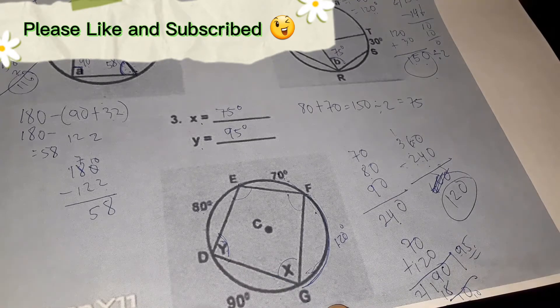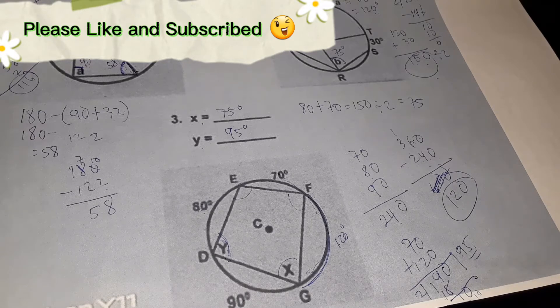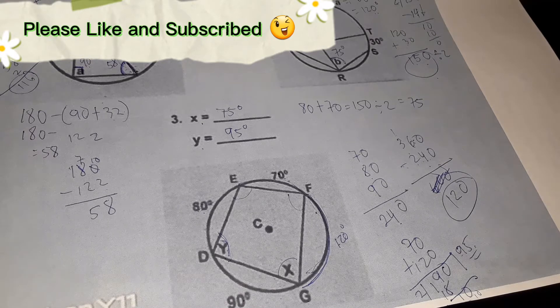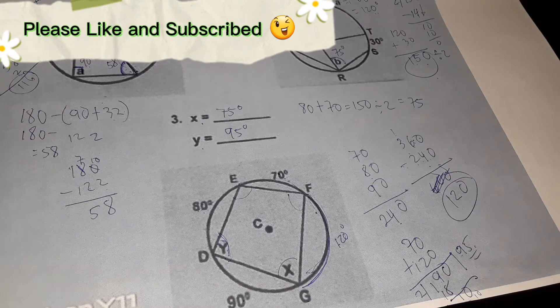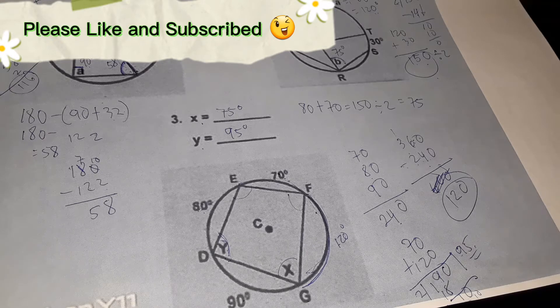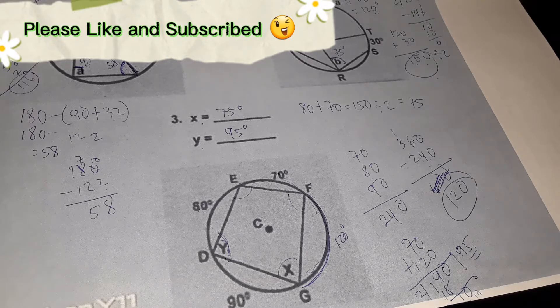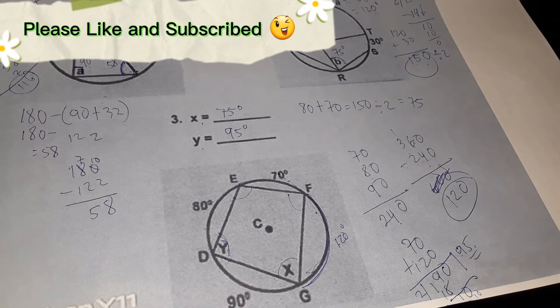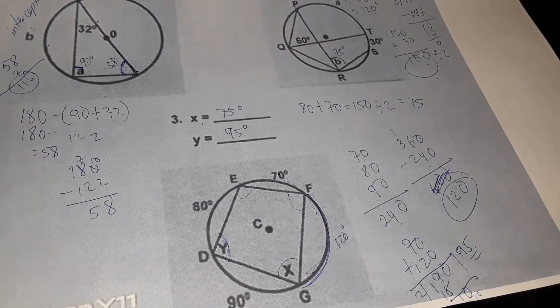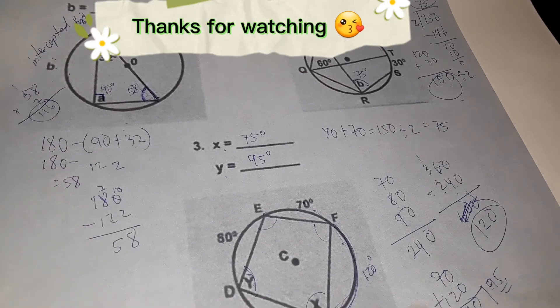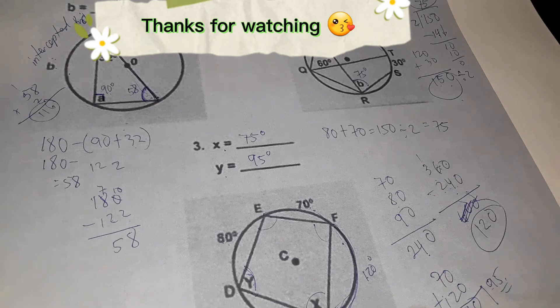That's how you find unknown variables when dealing with angles or arcs, talking about inscribed angles and central angles, and of course, with their intercepted arcs. That's all for today. I hope you learned from this video and I hope you're going to watch more videos. Bye and keep safe.